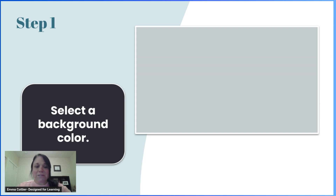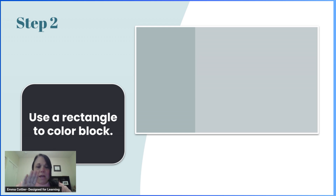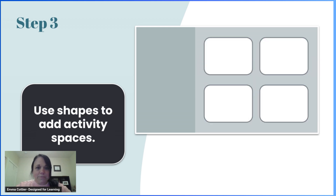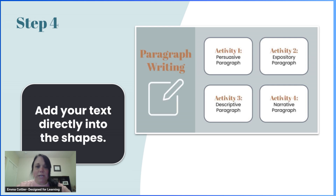Step one: select a nice soothing background color. Step two: color block — put a rectangle on part of the slide, usually the left side, as a great place for instructions. Step three: add however many shapes you want as options — you could use circles or rectangles. I'm particularly fond of the rounded rectangle. The beauty of shapes is you can simply click and add your text right in.